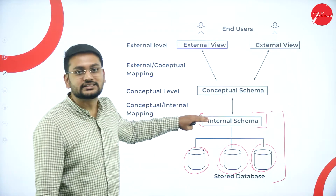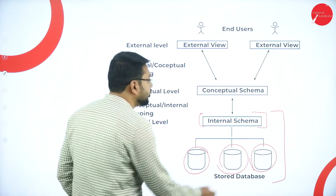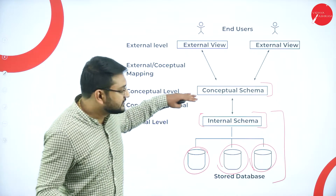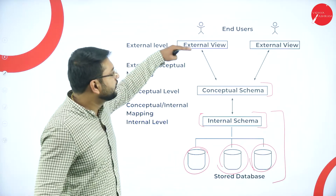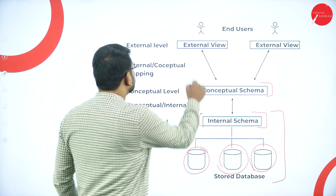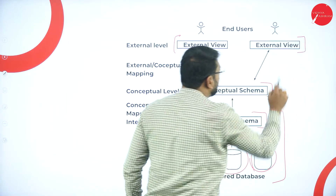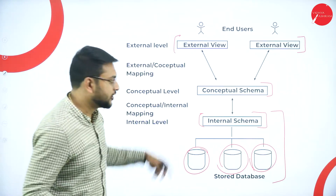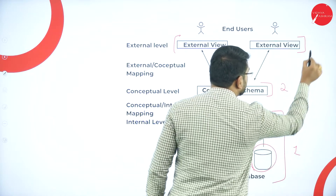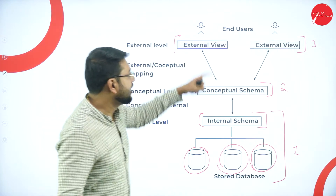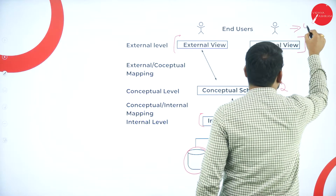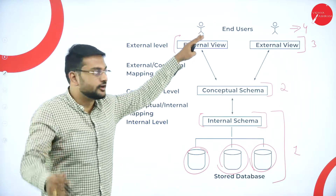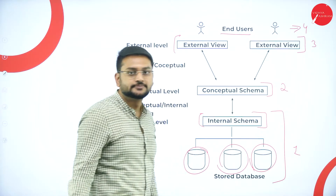Above the internal schema, you have one more schema — the conceptual schema. Then above that, I have one more thing which I will call the external level, or external view. And the last part is what I will call the users, or end users. So we have four parts in this diagram.